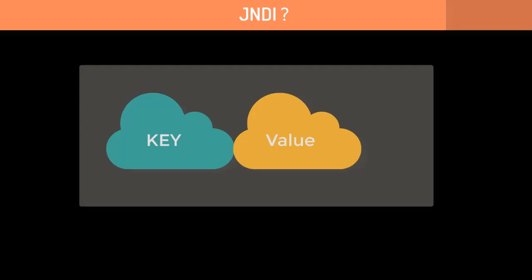What is JNDI and what are its advantages? JNDI is like a directory which has key-value pairs. For example, if we want database location information stored in JNDI, we can add a key like 'DB server' and set its value to the IP or hostname of the server where the database resides.